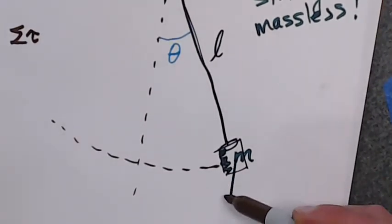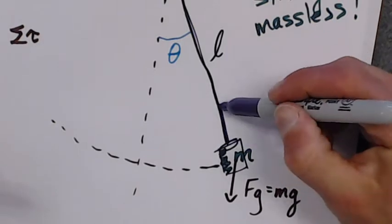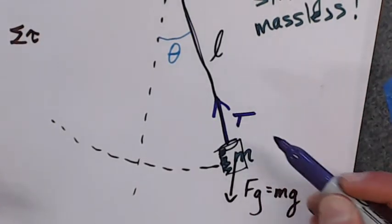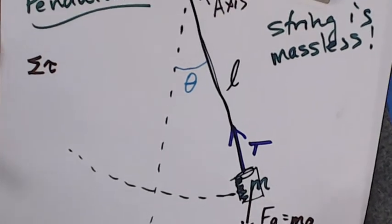I have the force of gravity coming down, which is mass times gravitational field strength, and then I have the tension in the string. So those are my two torques. Let's see if we can sum them up.